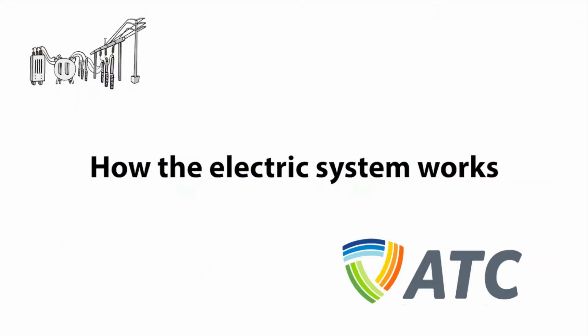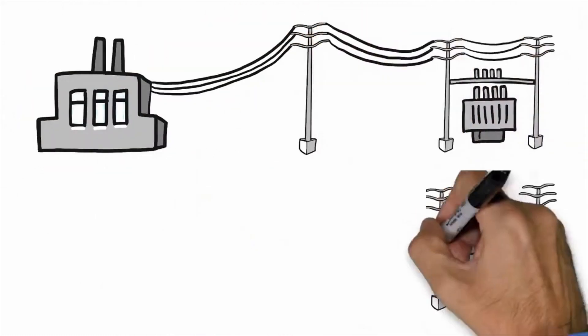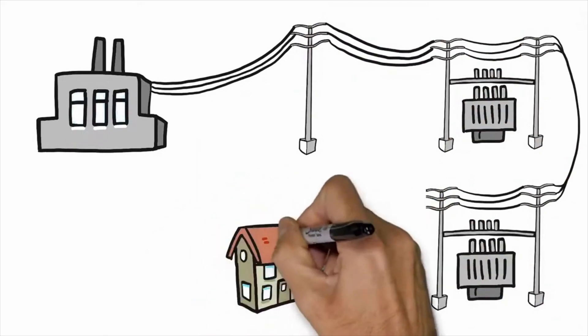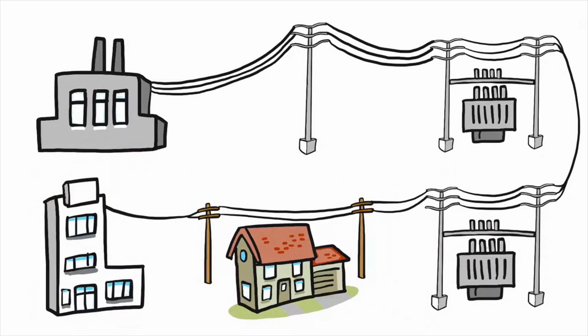How the electric system works. Electricity generated at power plants travels over high-voltage transmission lines to substations. There, the high voltage is lowered for travel over the distribution system to homes and businesses.